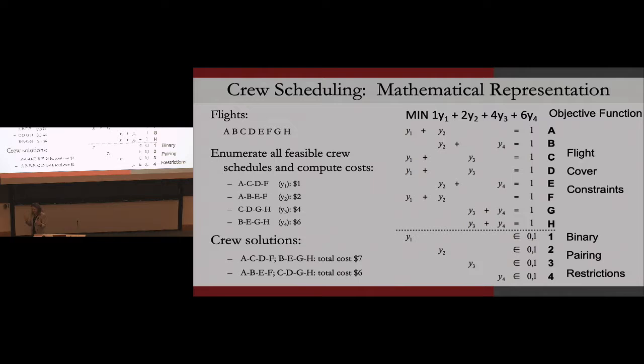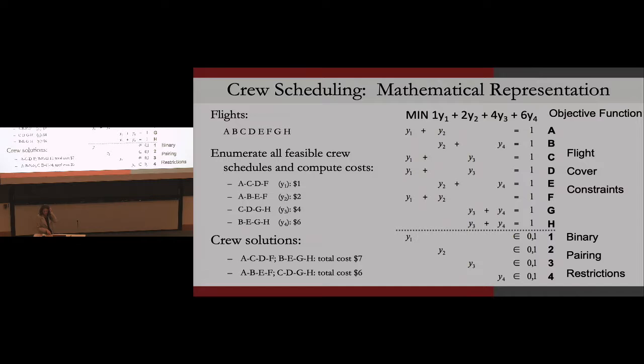A question came up: do the airlines ever allow pilot preferences? In many parts of the world, scheduling is very much driven by pilot preferences. What we do in the US is a hybrid. We come up with these schedules — called pairings — representing work a crew will do for one, two, or maybe three days. Then we solve a second problem that puts those together for a full month, and lets pilots bid on monthly schedules based on their seniority.